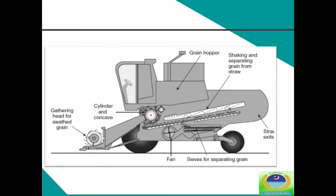All grain crops can be harvested using a combined harvester. The term 'combine' is used because this machine combines different operations such as cutting, gathering, threshing, and cleaning. A self-propelled combine consists of different parts: the gathering head brings the grain and straw into the combine, the cylinder and concaves thresh the grain, and the screens, fan, and straw walkers separate the grain from the straw. This straw is then expelled from the back of the combine.